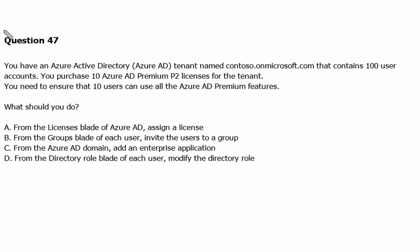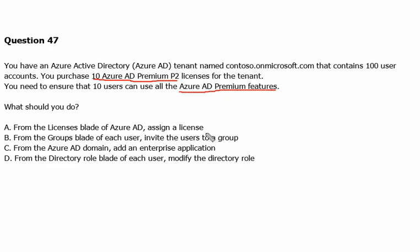Let's move to question number 47. You have an Azure Active Directory tenant named contoso.microsoft.com that contains 100 user accounts. You purchase 10 Azure Active Directory Premium P2 licenses for the tenant. You need to ensure that 10 users can use all the Azure AD Premium features. What should you do? From the license blade of Azure Active Directory, assign a license — this is the correct answer, so Option A is correct.